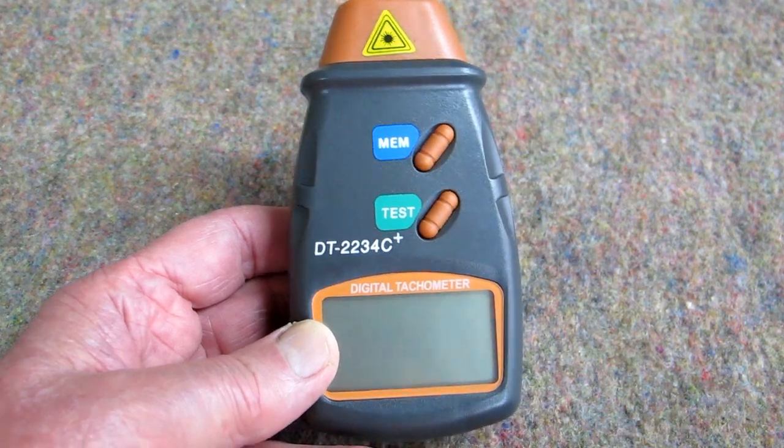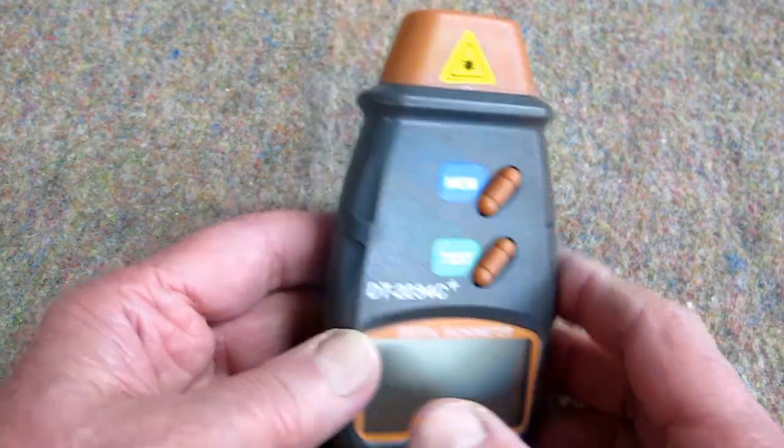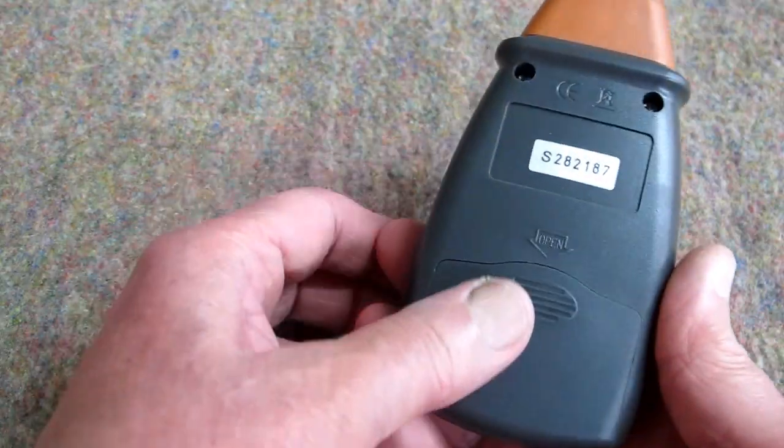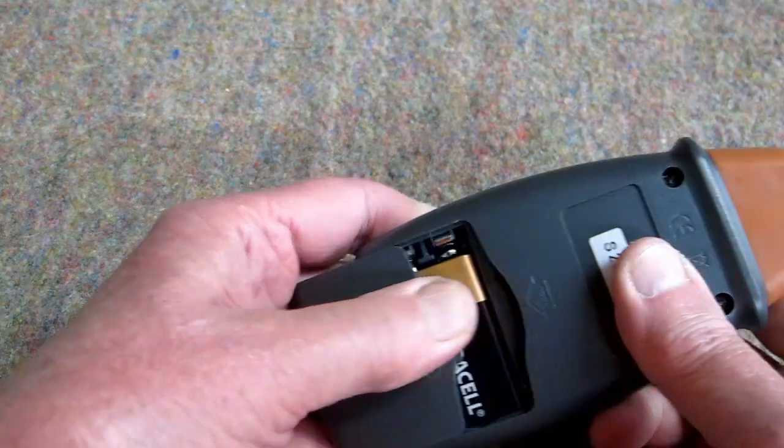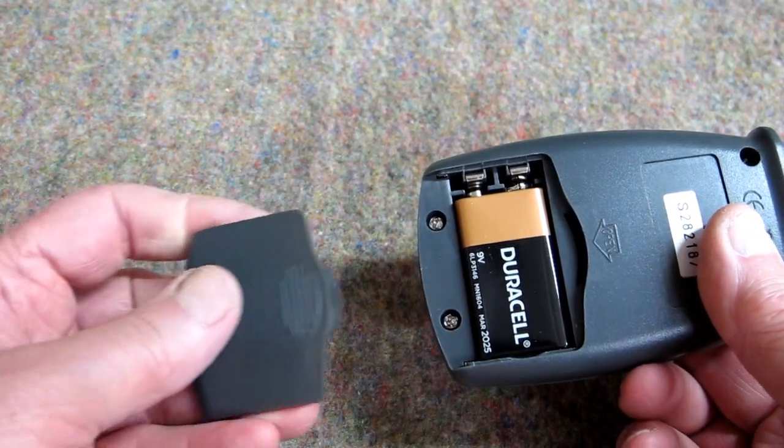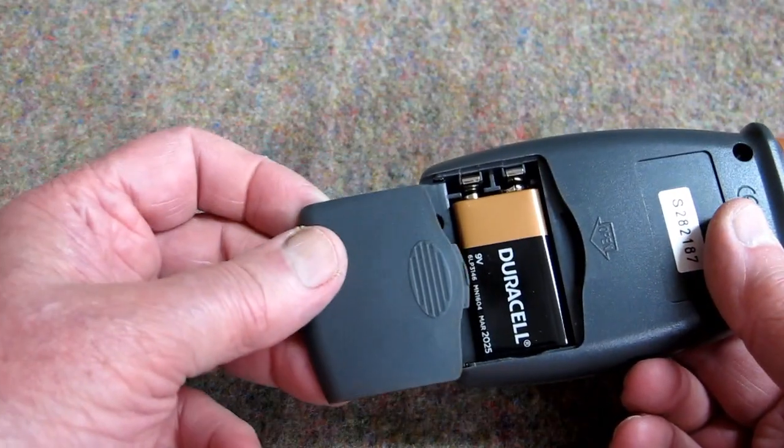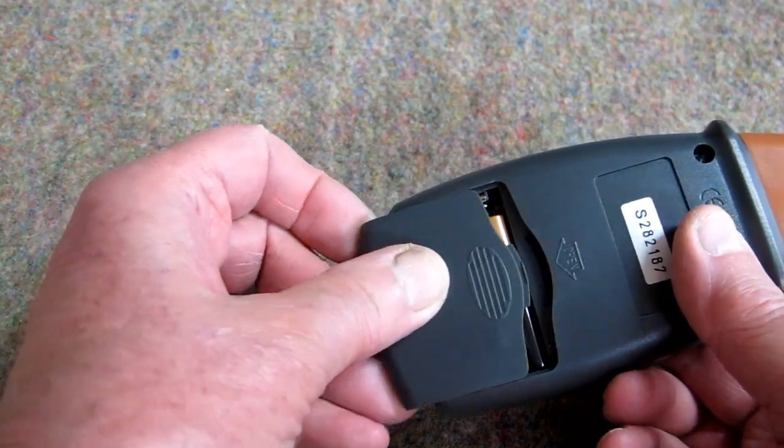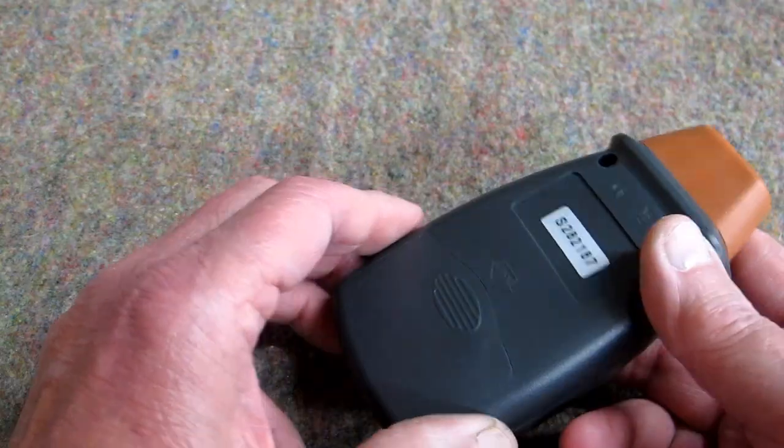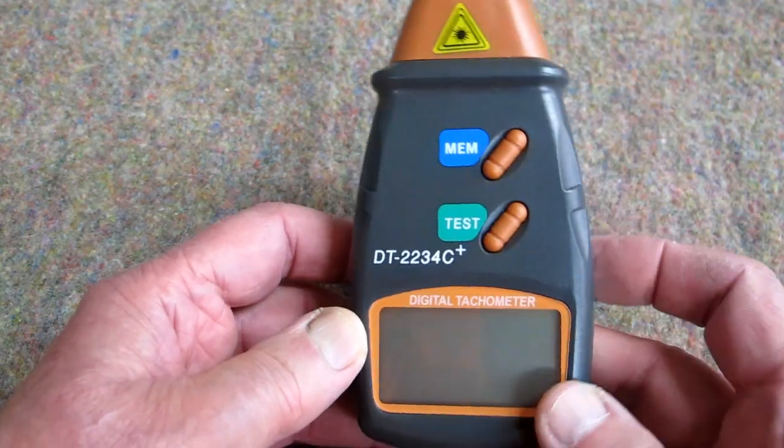This is the DT2234C Plus and this one uses a 9 volt battery and it just slides in there. This came with a battery that was totally dead so do not expect a good battery.